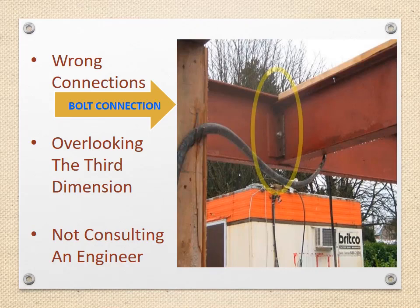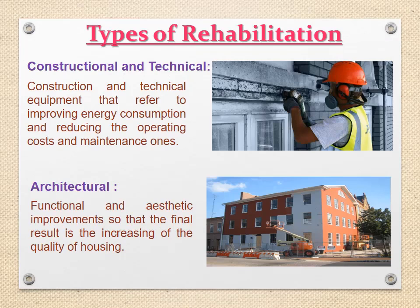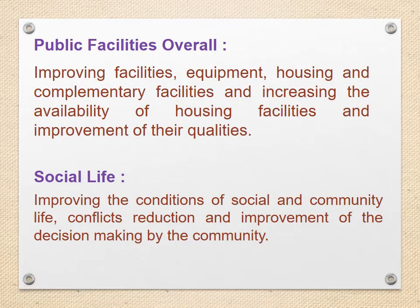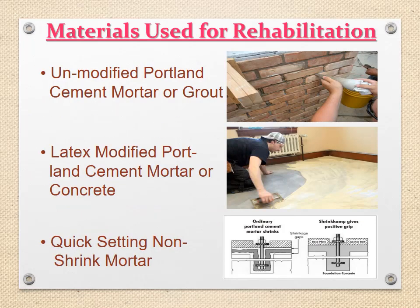Types of rehabilitation: Constructional and technical — improving energy consumption, reducing operating costs and maintenance. Architectural, functional, and aesthetic improvements to increase the quality of housing and public facilities. Overall improvement of facilities, equipment, housing, and complementary facilities. Social life improvements — improving conditions of social and community life, conflicts reduction, and improvement of decision making by the community.